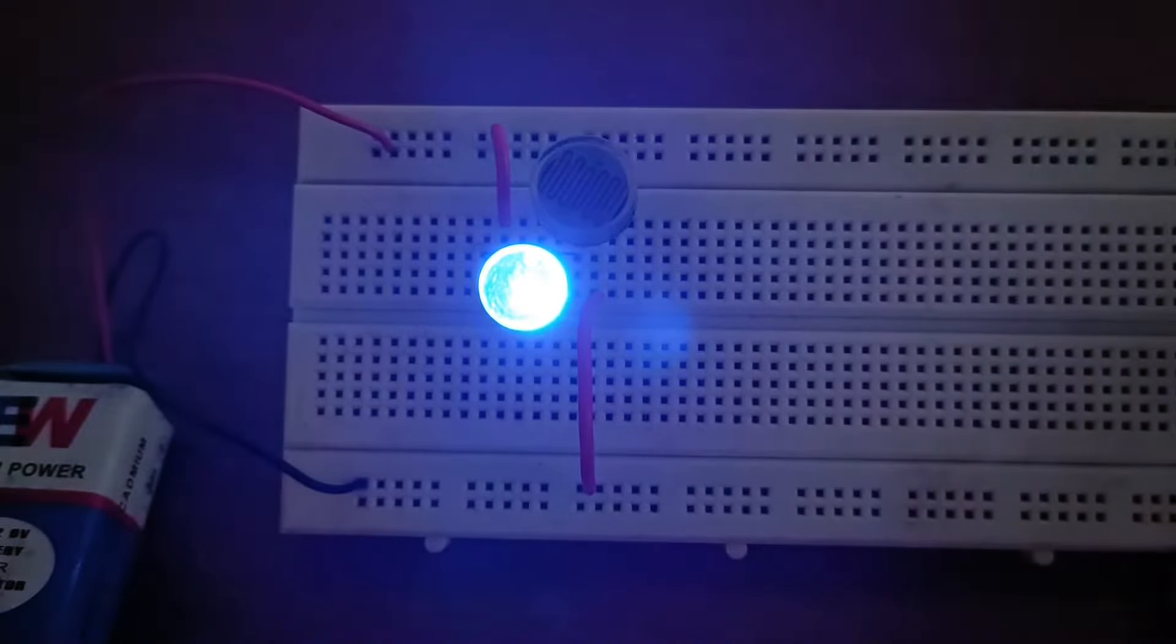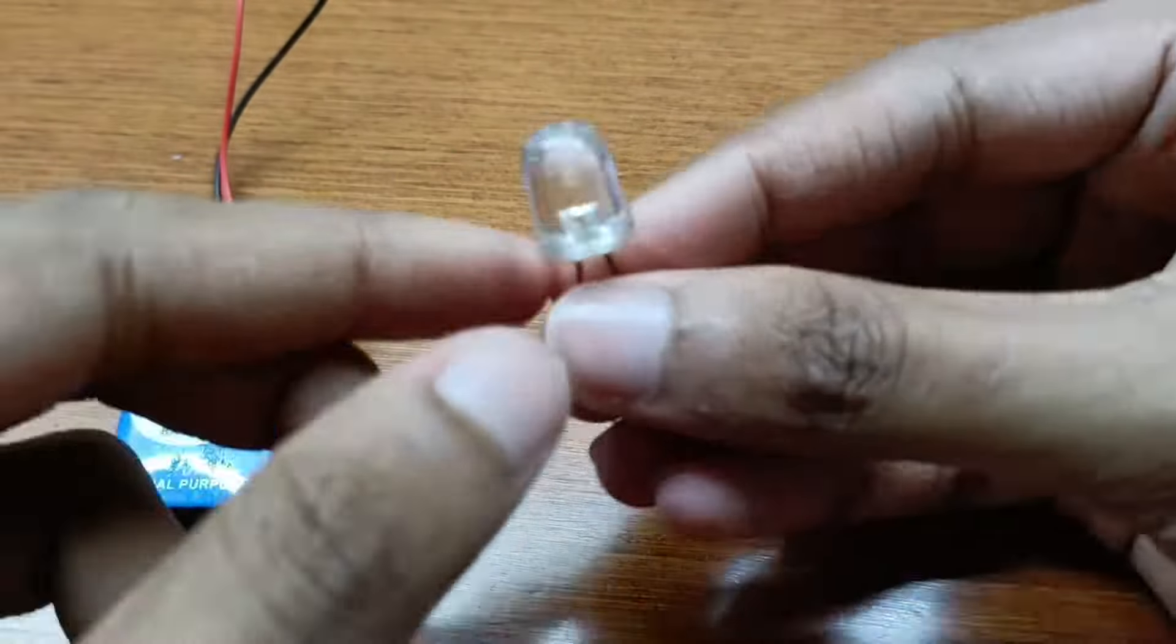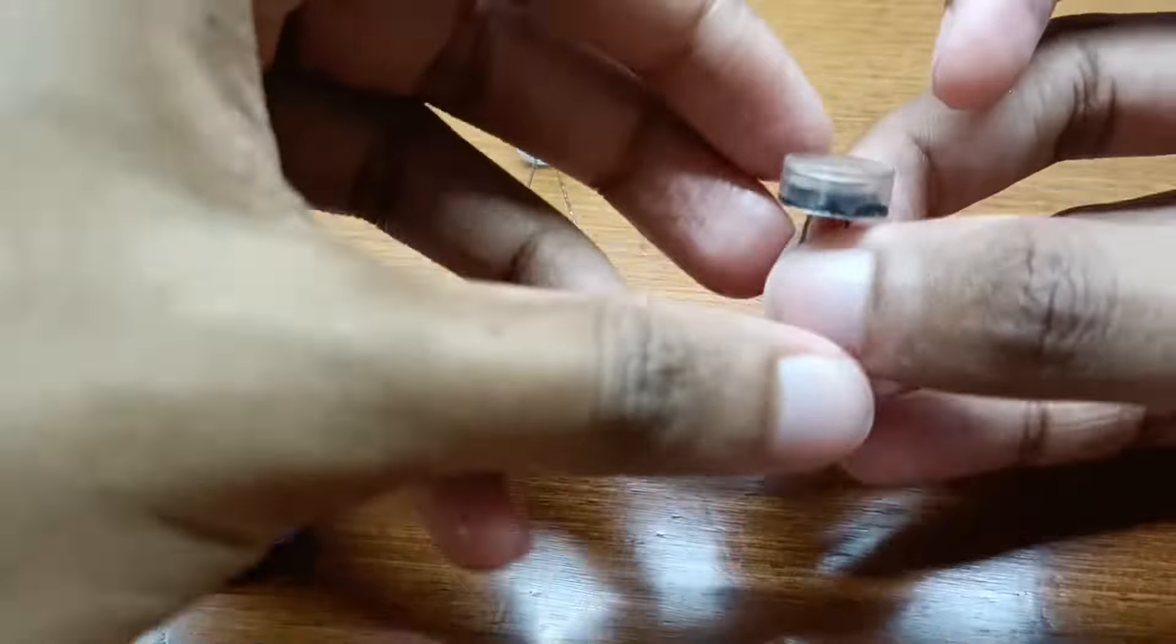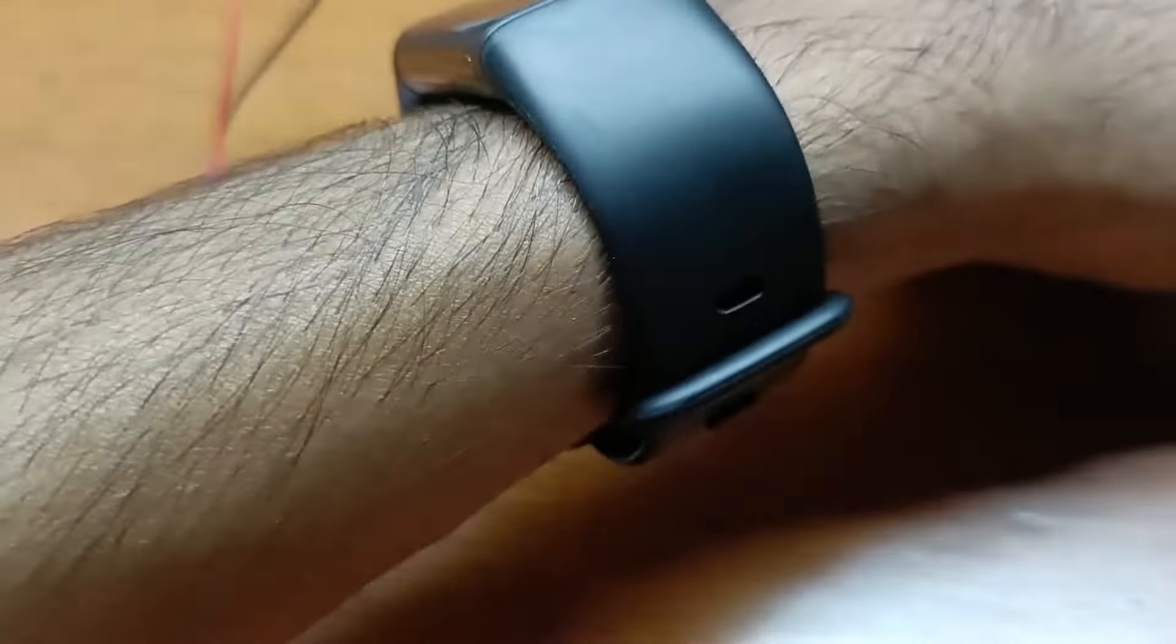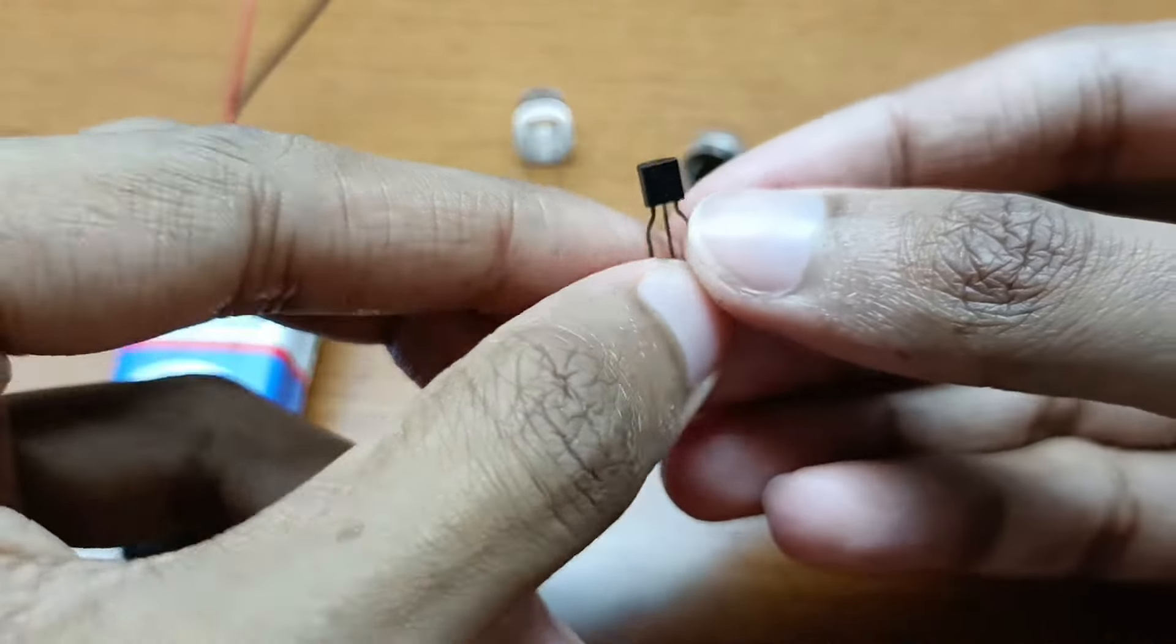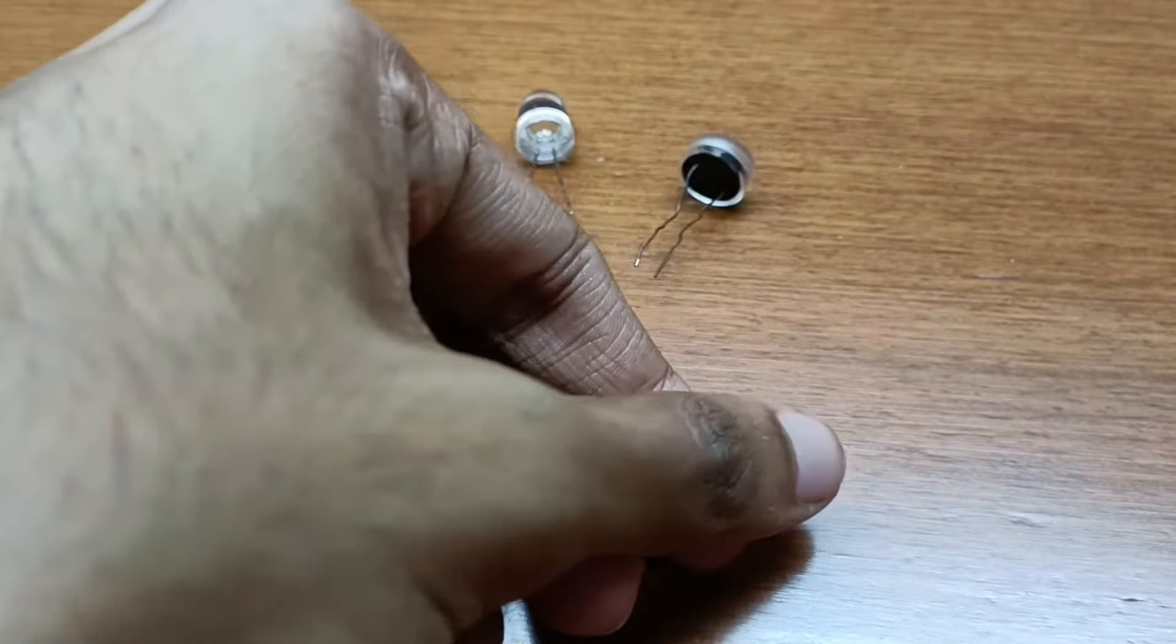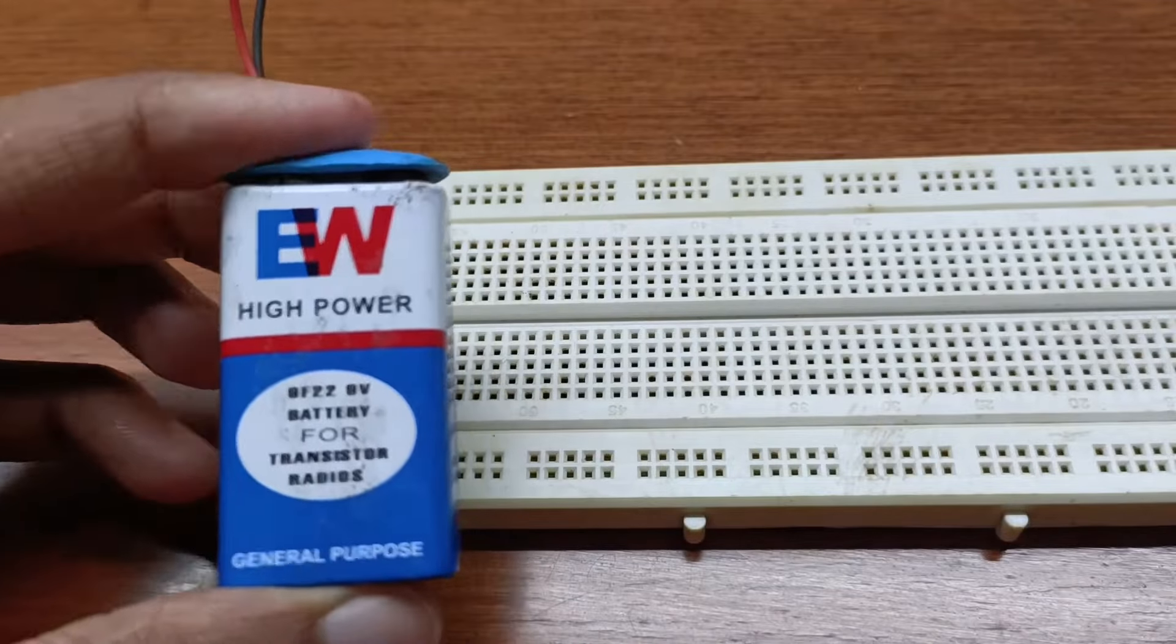You will need a 9 volt battery with a battery clip, an LED which stands for light emitting diode, an LDR which stands for light dependent resistor, a 100k ohm resistor, a BC 507 transistor, a breadboard, and some wires for connecting. You can follow the steps shown in this video to complete your dark sensor.